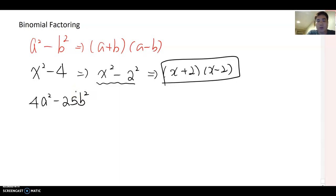Look at another example: 4a² - 25b². Can you make 4a² as something squared? Yes, this is (2a)². What about 25b²? This becomes (5b)².